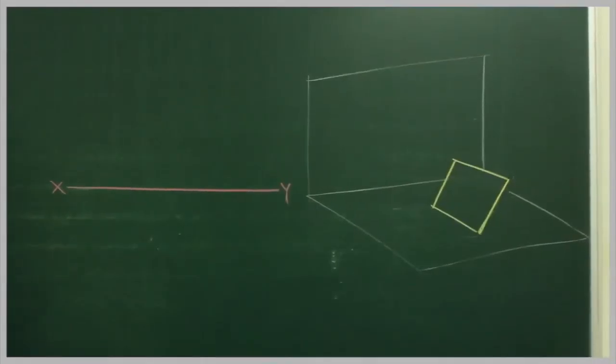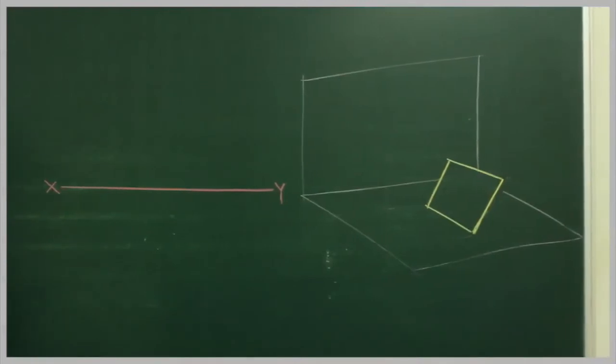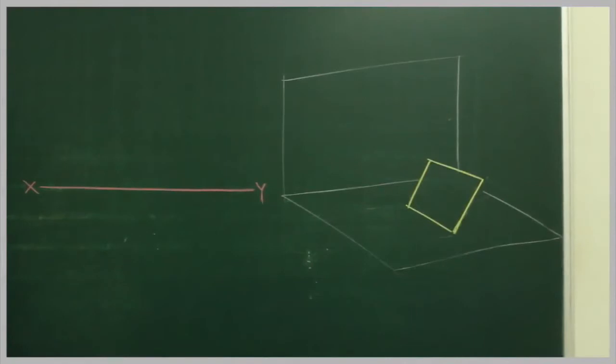In this problem, a square plane ABCD of side 30 mm is resting on one of its sides on HP and it is tilted in such a manner that from top view it is seen as a rectangle.